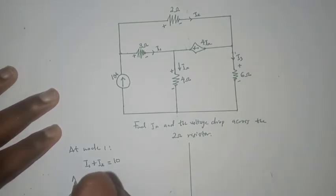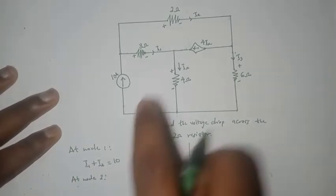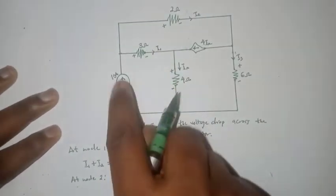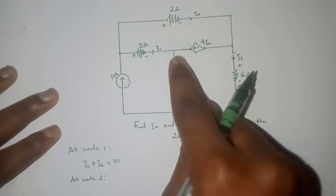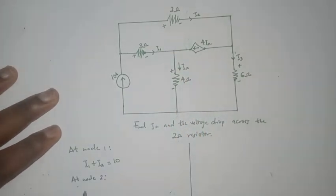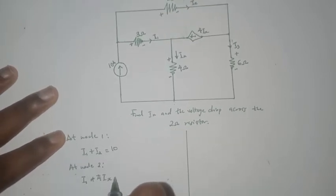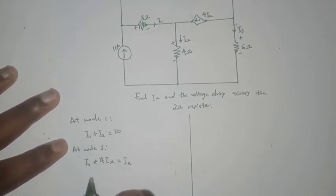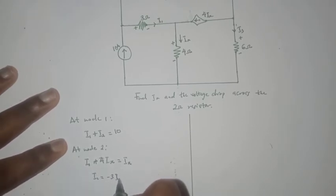Then we proceed to node 2, which is here. So we have i2 entering, 4ix entering, then i3 leaving. So we know that i2 plus 4ix equals i3. This simply means that i2 equals minus 3ix. Let's call this our second equation. This one is our first.